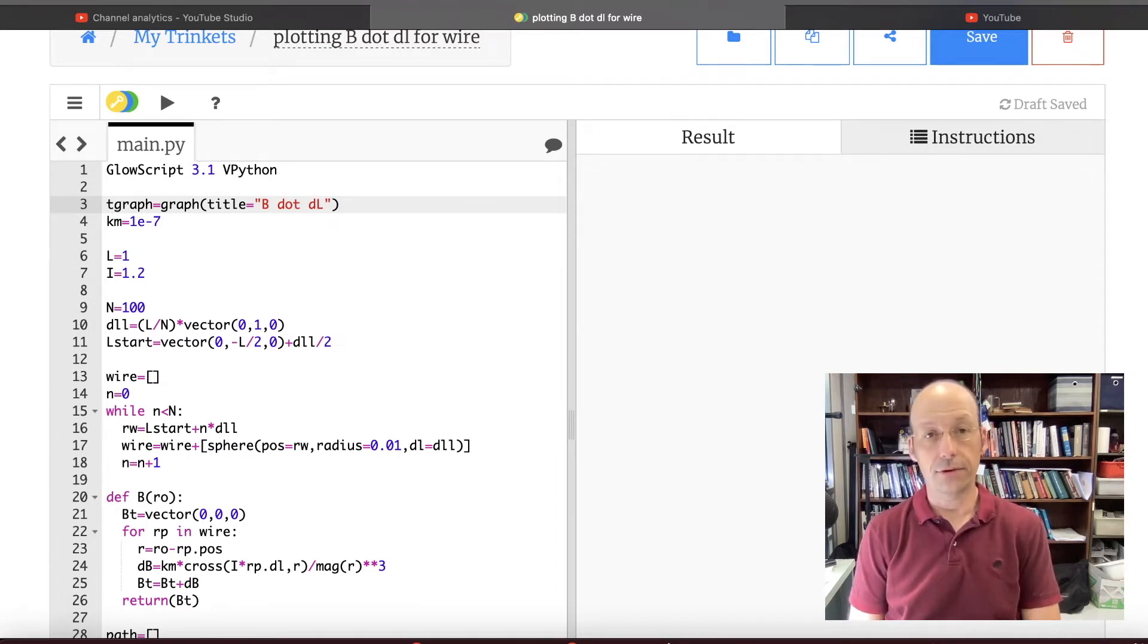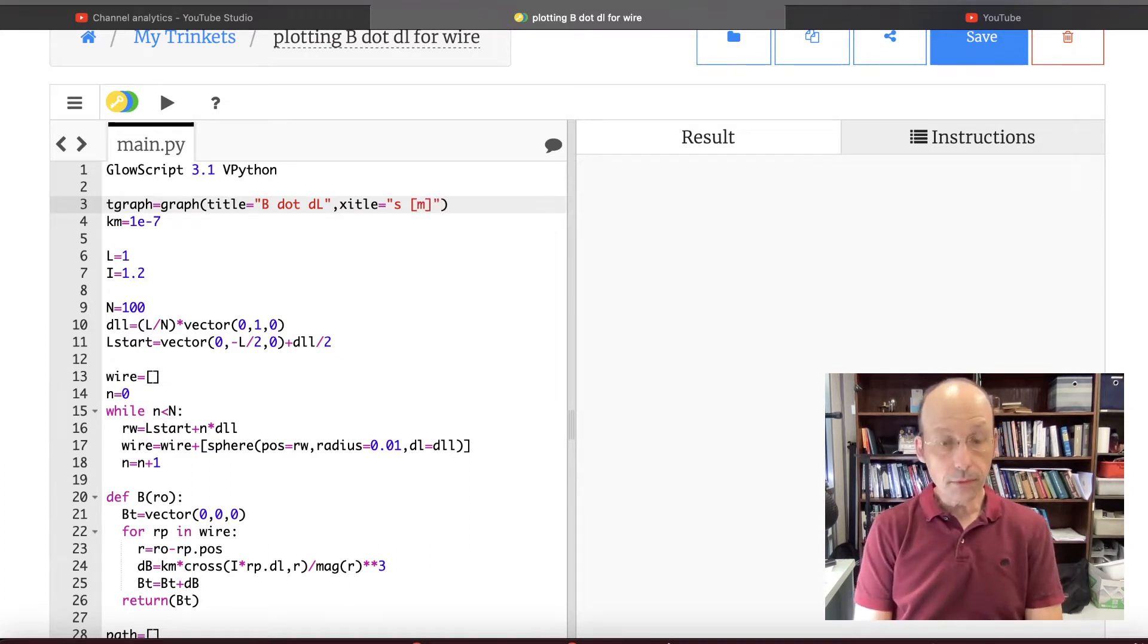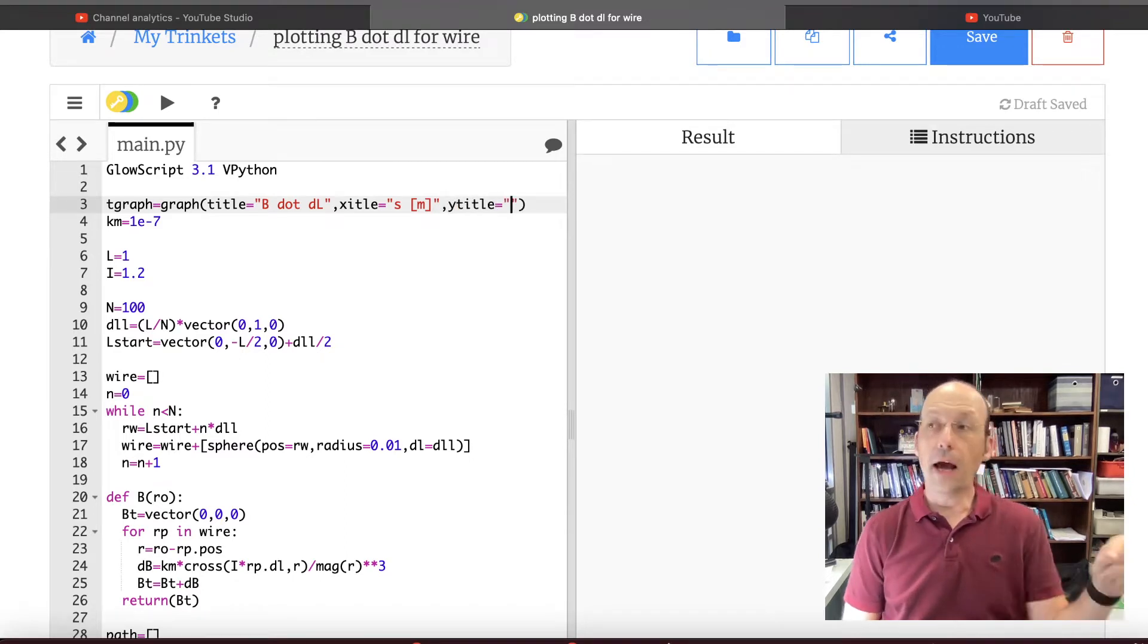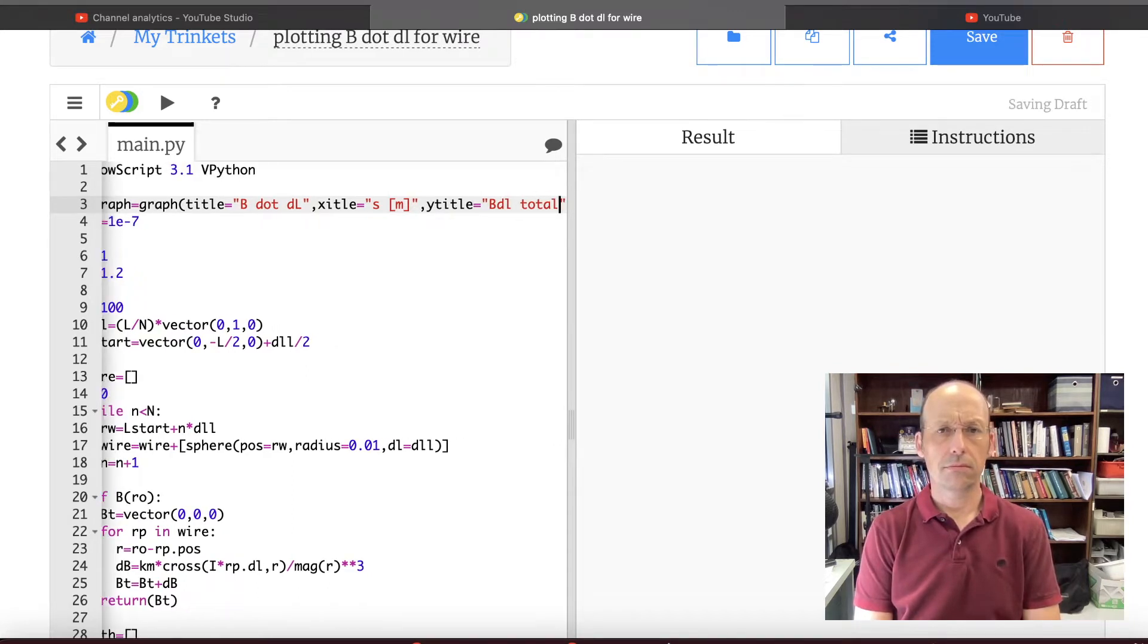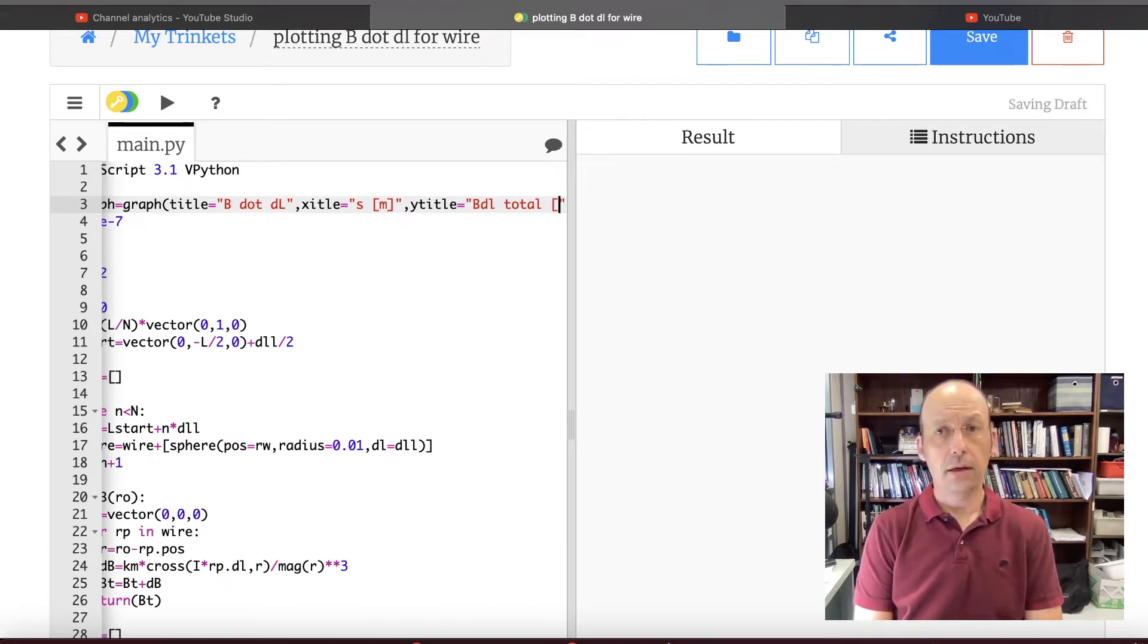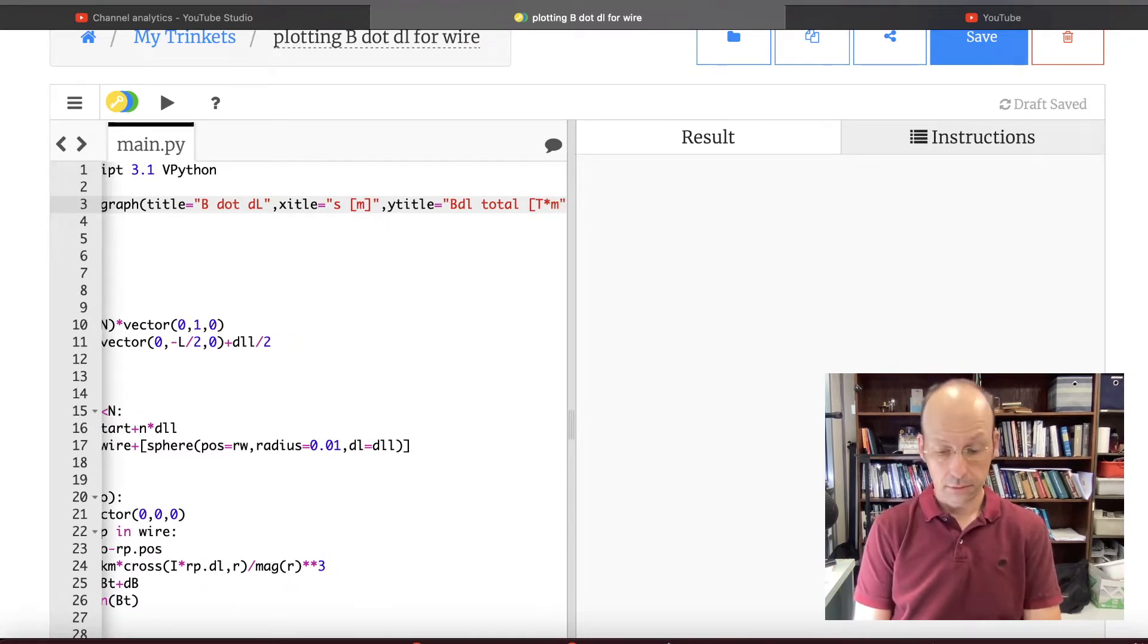And then I'm going to say I can give it a title. And this will call B dot DL. And then the x title is going to be equal to, it's actually the distance along the path. So let's call this s. That's the arc length. S in meters. And then the y title. I'm going to have a cumulative sum. So this will be, I guess, B dot DL total. That's kind of weird, I know. And that's in tesla meters.